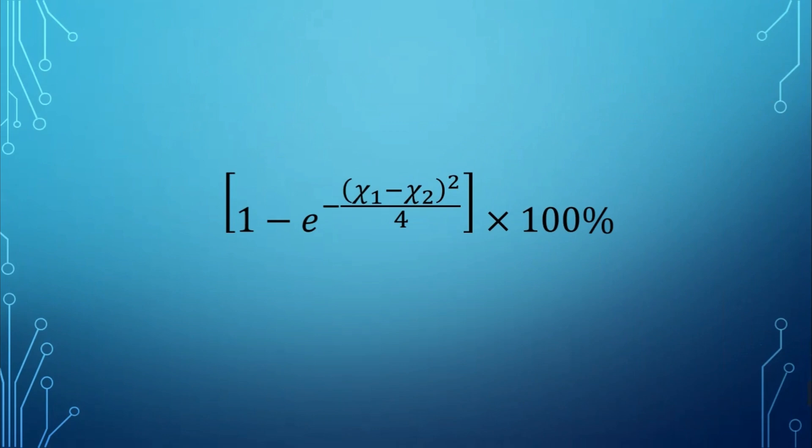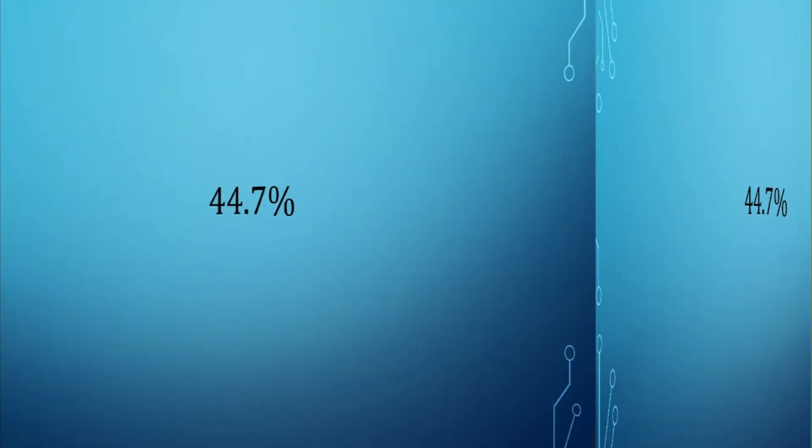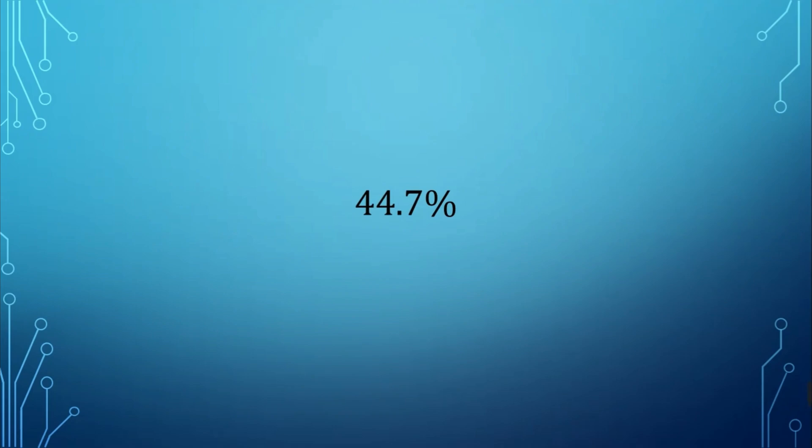We then put that into the equation: 1 minus exponential of negative the electronegativity difference squared, as 1.54 squared divided by 4, and then multiply it by 100 percent. This ultimately gives us 44.7 percent.